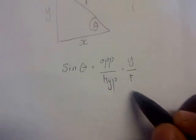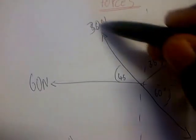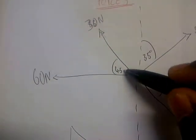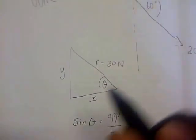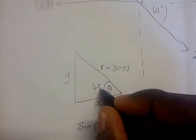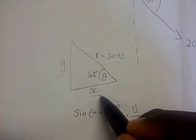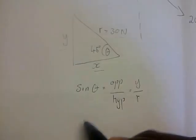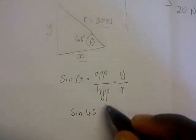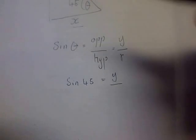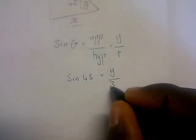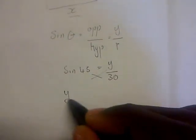To resolve a vertical component, let's look at this example: we have 30 newtons at an angle of 45°. Our 30 newtons is r, which is the hypotenuse, and our angle theta is 45°. We need to resolve this 30 N into a vertical component and a horizontal component. Using sin θ = y/r, cross-multiplying gives y = 30 sin 45.